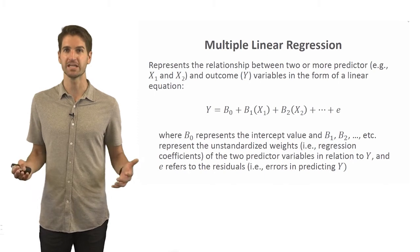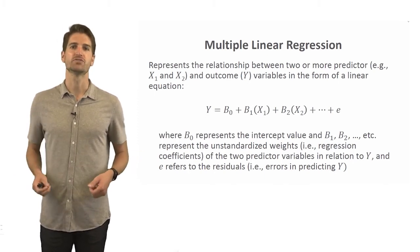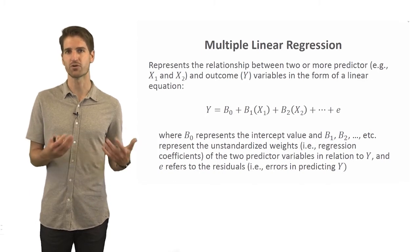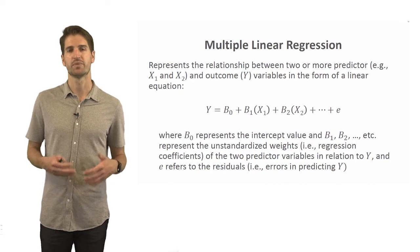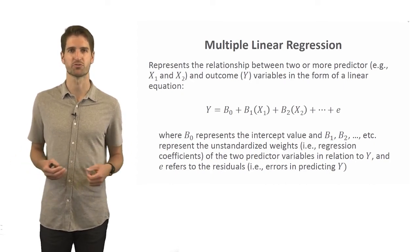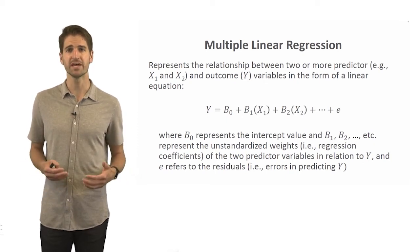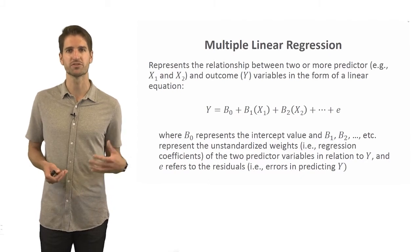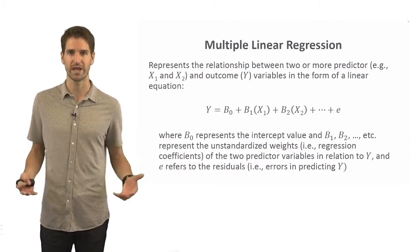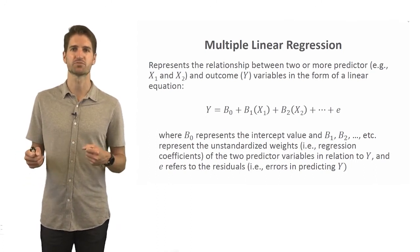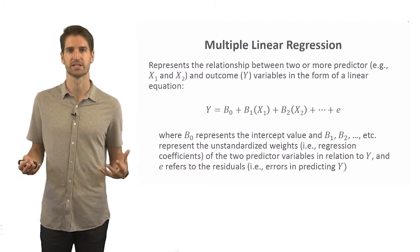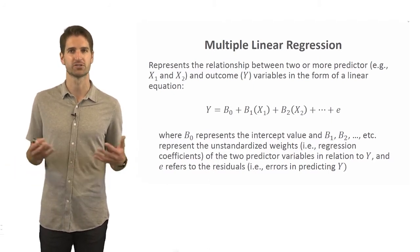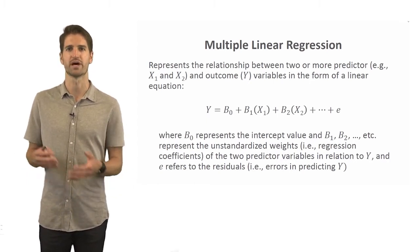The minimum number of predictor variables needed for a multiple linear regression model is two. The regression equation is written as: y equals beta sub zero plus b sub one times x sub one, plus b sub two times x sub two, and so on. Beta sub zero is the y-intercept, while b sub one and b sub two are the regression coefficients or slopes, representing how much each predictor variable contributes to the linear relationship with the outcome variable y. The 'e' at the end represents our residuals — the residual error term — which captures any error in our estimation.